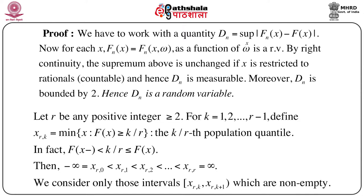Let r be a positive integer ≥ 2. For k = 1, 2, ..., r-1, define partition points x_{r,k} = min{x : F(x) ≥ k/r}. That means x_{r,k} is nothing but the (k/r)-th population quantile, since it is defined in terms of the distribution function F(x). So x_{r,k} denotes the (k/r)-th population quantile. By the properties of the distribution function, we immediately have F(x_{r,k}-) < k/r ≤ F(x_{r,k}).